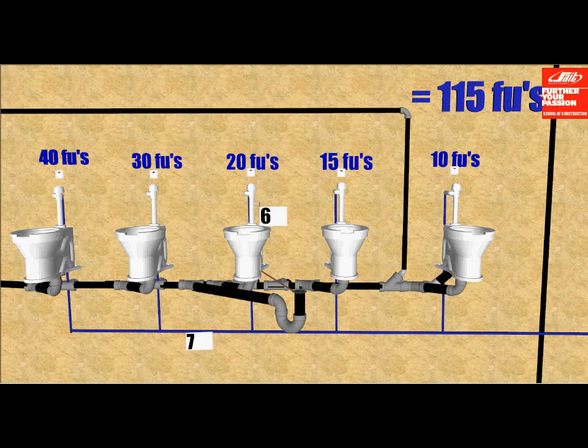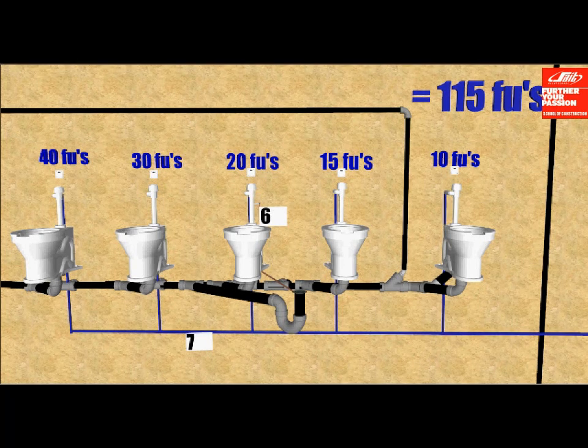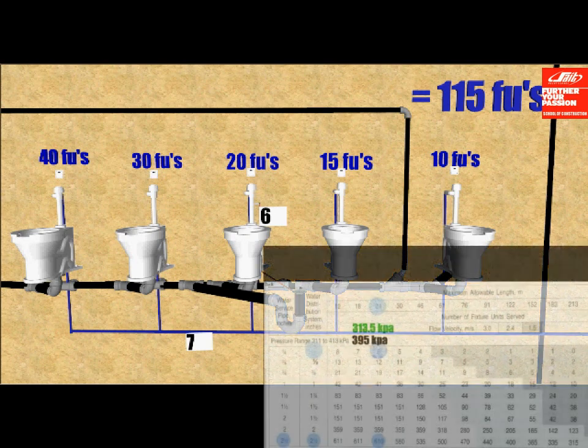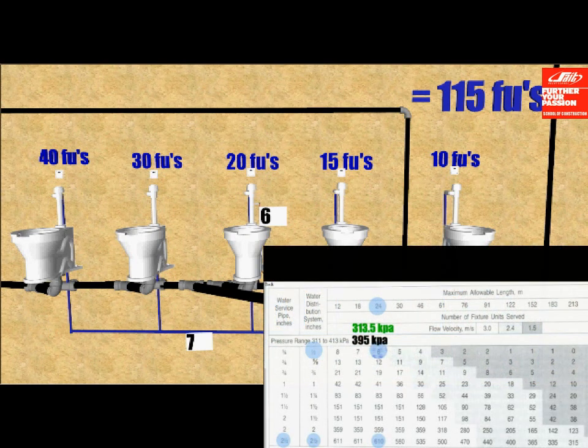Number seven is feeding the two flushometer toilets to the left, which total 70 fixed units. So you look at the 83 and you would find it to be inch and a quarter in size.